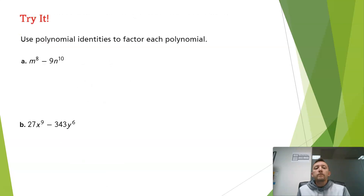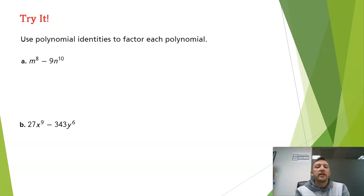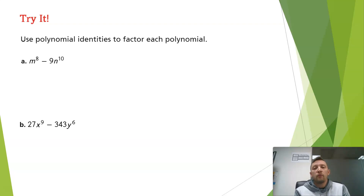Try these two: first, factor m to the eighth minus 9n to the tenth — that's a difference of squares. Figure out what you'd square to get m to the eighth and what you'd square to get 9n to the tenth. Second, factor 27x to the ninth minus 343y to the sixth — a difference of two cubes. Pause and hit play when you're ready to check.